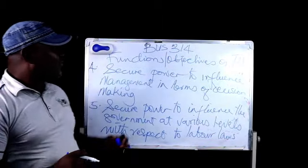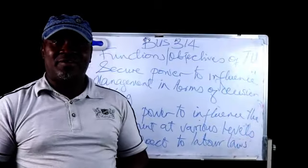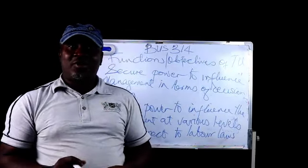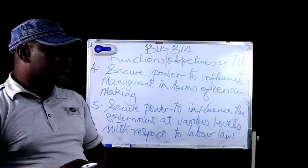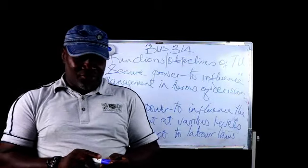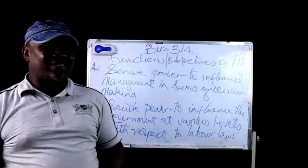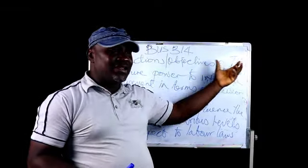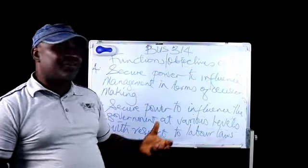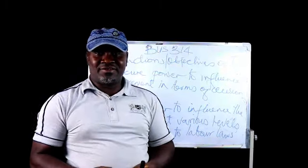These are the major functions of the trade union. In this short session, we've been able to look at what a trade union is, its characteristics or features, and its functions or objectives. Next class, we'll be looking at another party in industrial relations — the employers' association. The trade union is a body representing the employees, and the employers also have their own body called the Employers' Association.